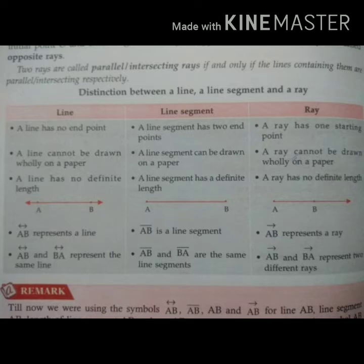And in ray, one point is fixed and the second point has no fixed length. It is represented with one side point and other side arrow.